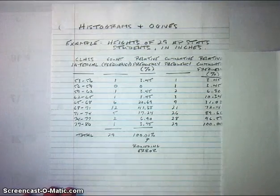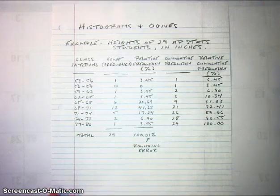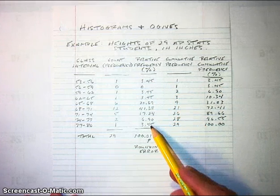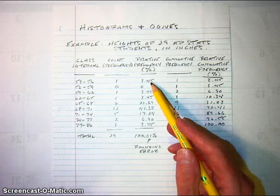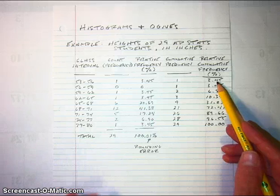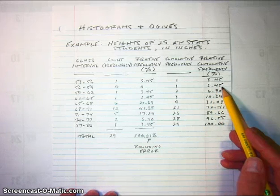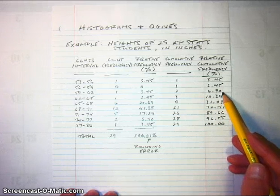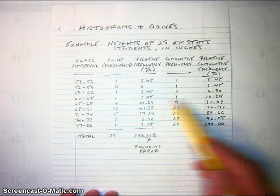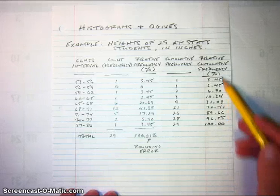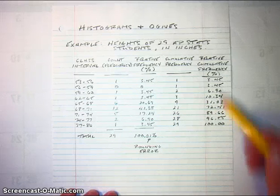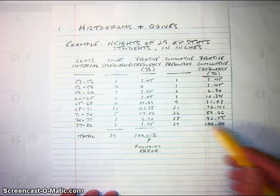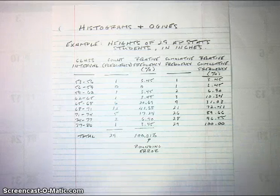Next, we'll calculate the relative cumulative frequencies and make a diagram from those. These are basically running totals from the relative frequencies. In the first interval we have 3.45% of observations. The second interval adds nothing, so the running total stays at 3.45%. In the third interval we add 3.45% more, reaching 6.90%. We add 3.45% more in the fourth interval, making the running total 10.34%. Due to rounding error these don't exactly match, but the running total should reach 100% when all 29 observations are counted.